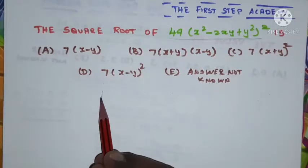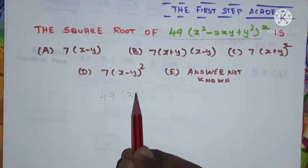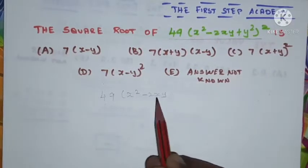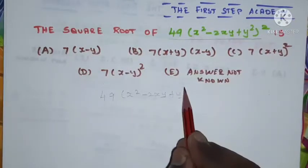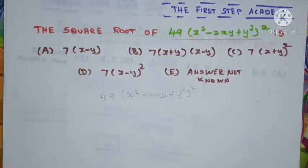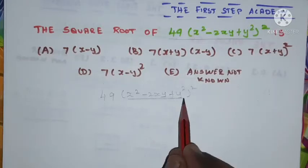Once again, I'm going to write the problem: 49 into x squared minus 2xy plus y squared whole squared. Now look at the terms inside the bracket.